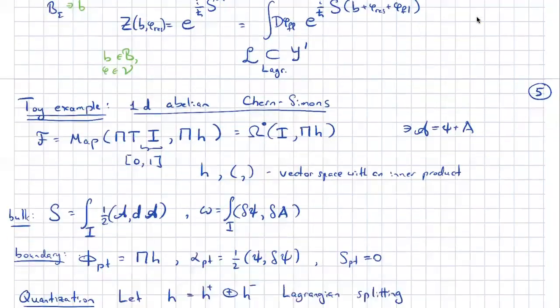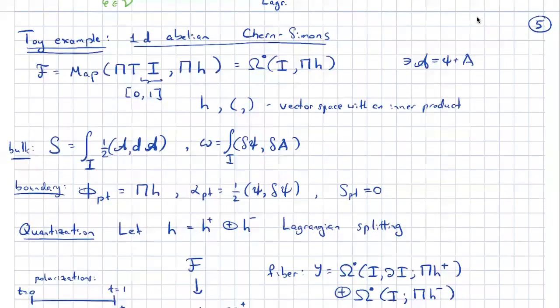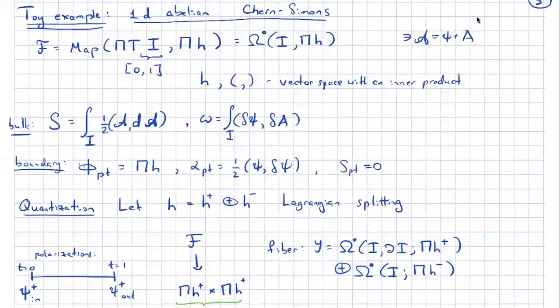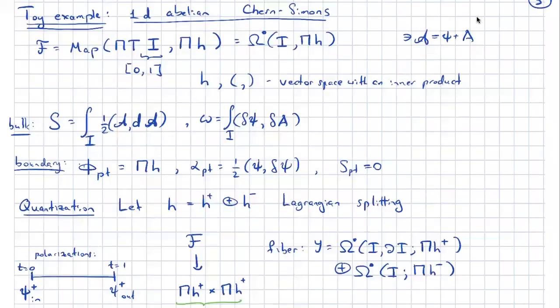The story I'm telling now is different — there are no configuration space integrals here, everything is more simple. A toy example is 1D Abelian Chern-Simons. The space of fields are differential forms on an interval with coefficients in some vector space equipped with an inner product, with a parity shift. So the fields are non-homogeneous differential forms — a zero-form component and a one-form component, both valued in this coefficient space.